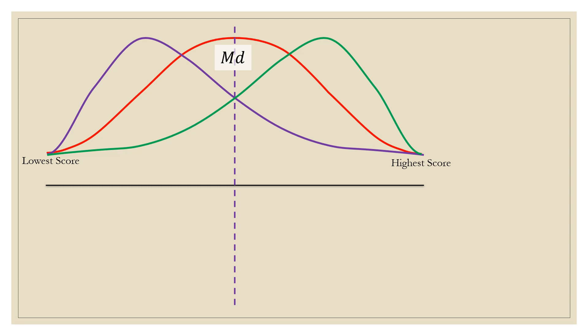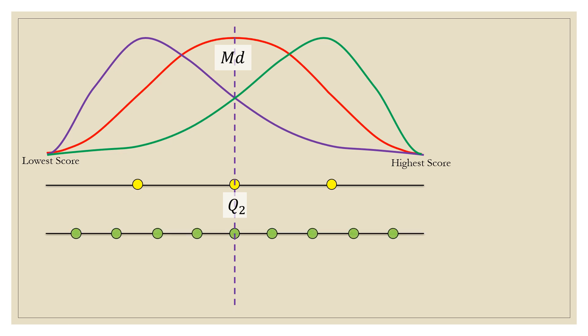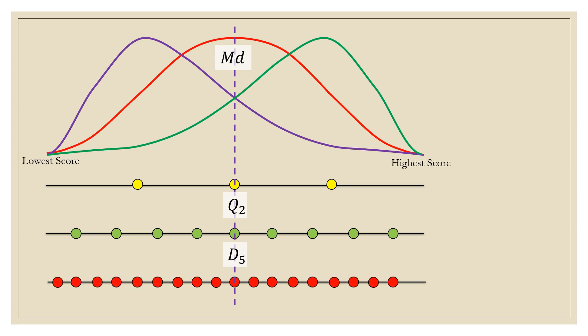Now, if we divide the data set into four equal divisions, we will obtain the quartile, and that centermost value will be the second quartile. If we divide the distribution into ten equal divisions, we will have the decile, and the centermost value in that distribution is the fifth decile. If we divide into one hundred equal divisions, the centermost value in that distribution is our 50th percentile.